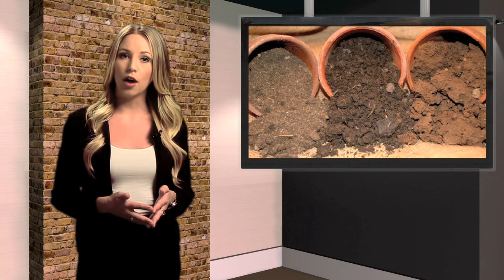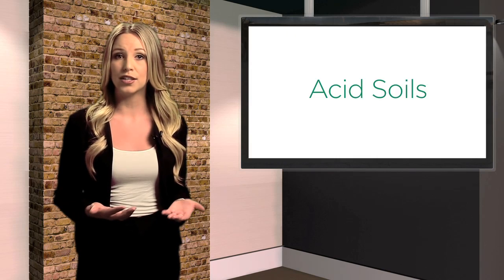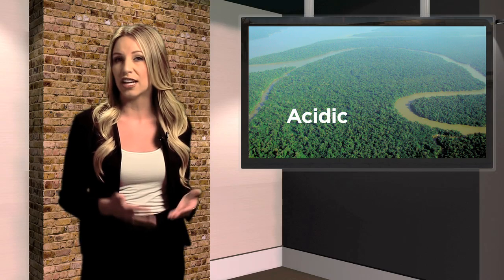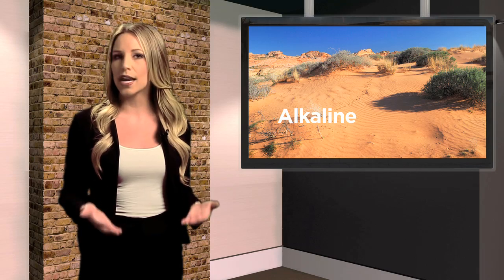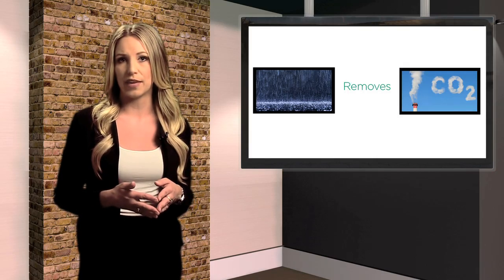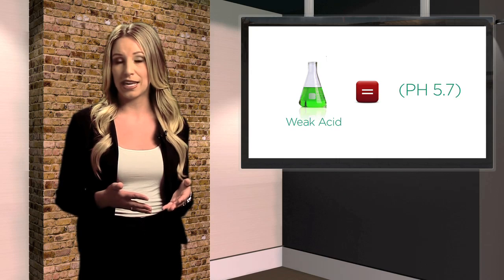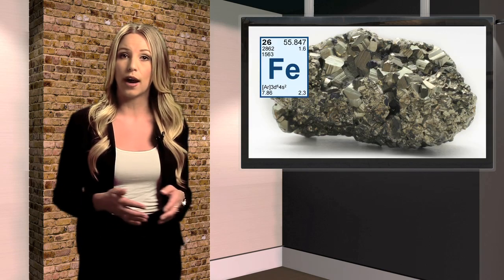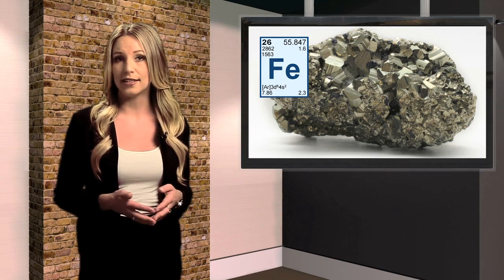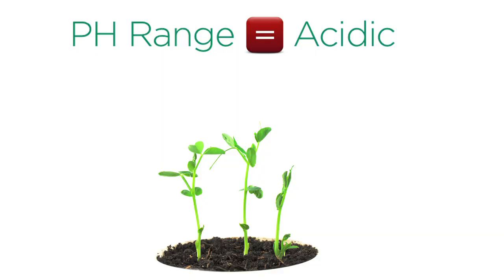The natural pH of water and soil varies around the earth. Acid soils are most often found in areas of high rainfall like jungles and forested areas, while desert soils are alkaline. This is because rainwater naturally removes CO2 from the atmosphere, forming a weak acid with a pH of 5.7. The naturally acidic rain then weathers rock and soil, which also lowers soil pH. Natural plant root activity further acidifies soil, as minerals like iron required for growth are more soluble in acids. As a result, the optimum pH range for most plants is acidic, between 5.5 and 7.0.